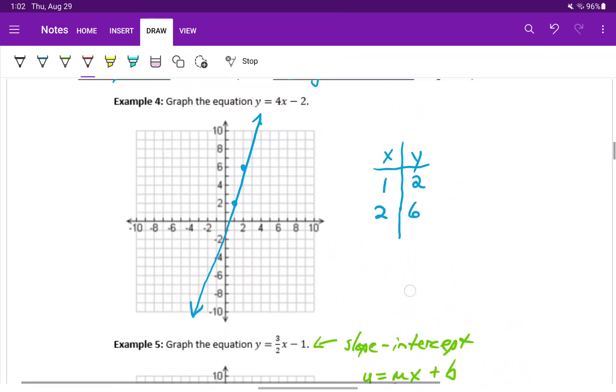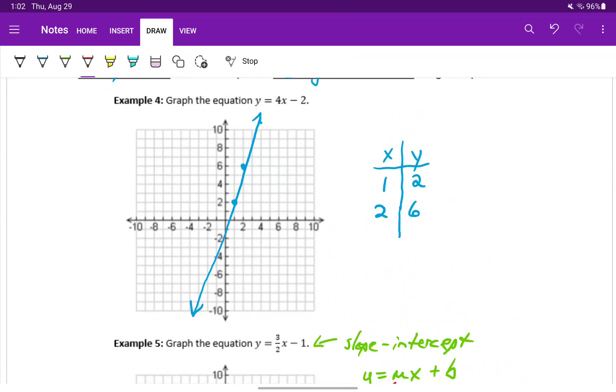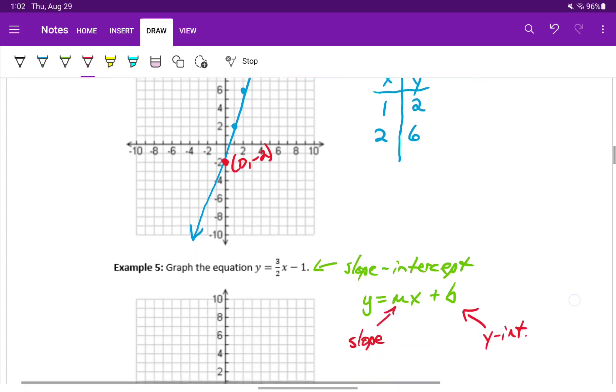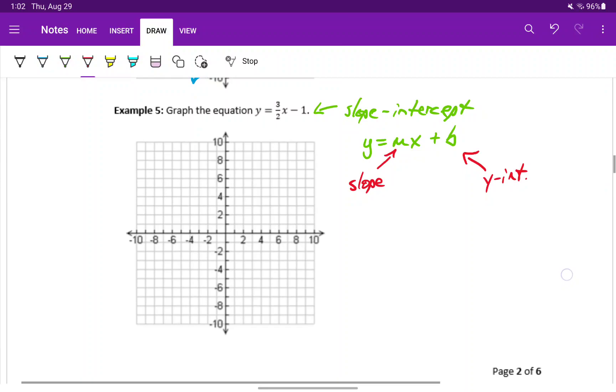Looking back at our last example, y equals 4x minus 2, minus 2 is our y-intercept, and our straight line, if we drew it accurately enough, hits the point 0, negative 2.